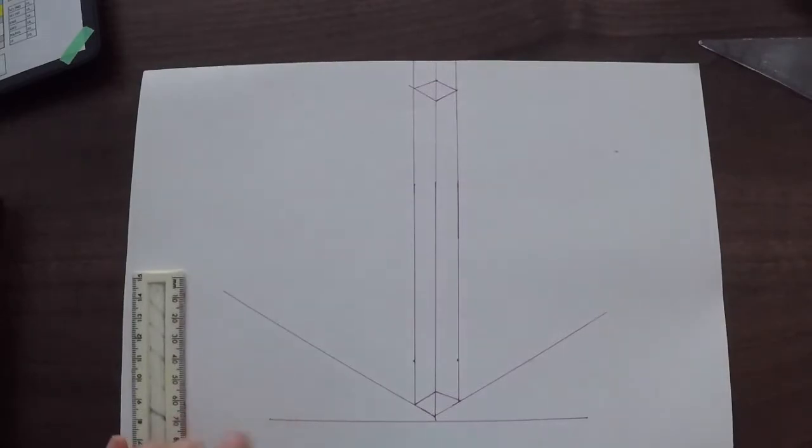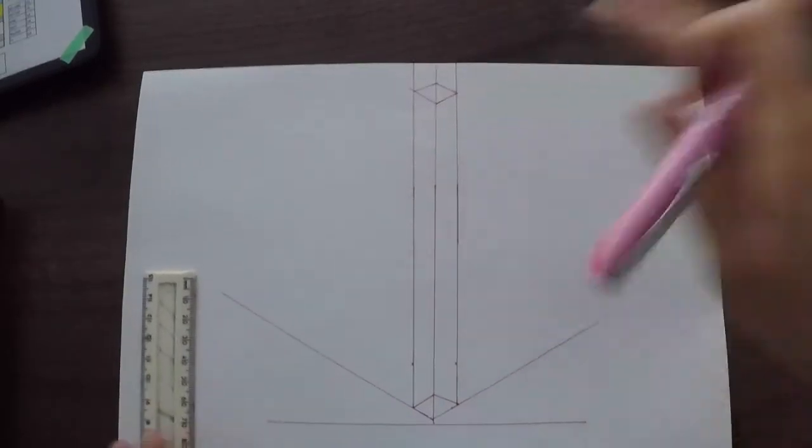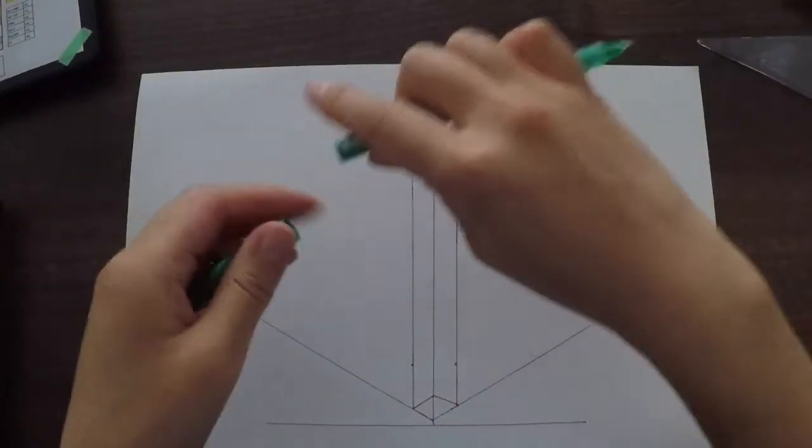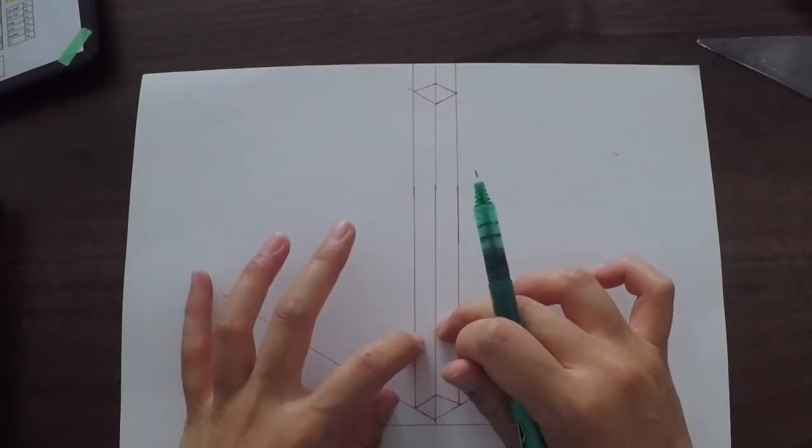So now you've got an isometric cube shape here. And now you're going to design the toothbrush. And the toothbrush is going to be pretty straightforward. You just simply make sure you stay within the grid here.